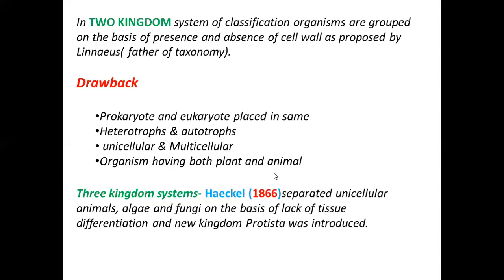After the two-kingdom classification, we come to the three-kingdom classification. The two-kingdom classification was given by Carolus Linnaeus, who is also called the father of taxonomy. The main basis was the presence and absence of cell wall — plants have a cell wall and animals do not — which divided organisms into Plantae and Animalia.